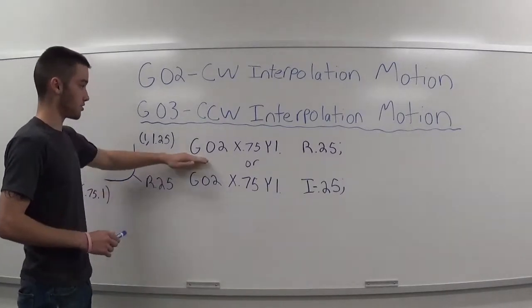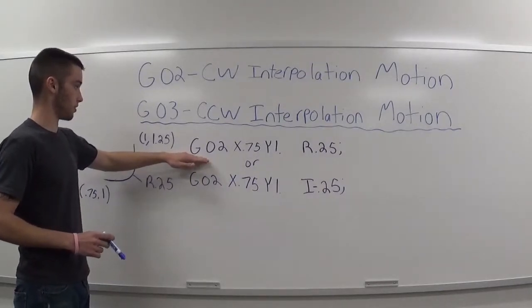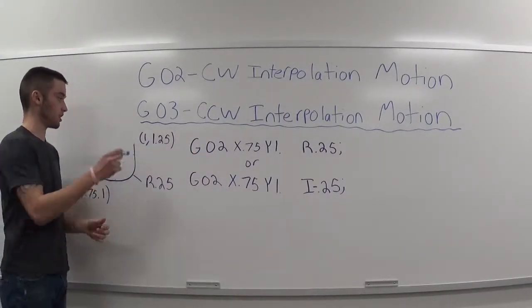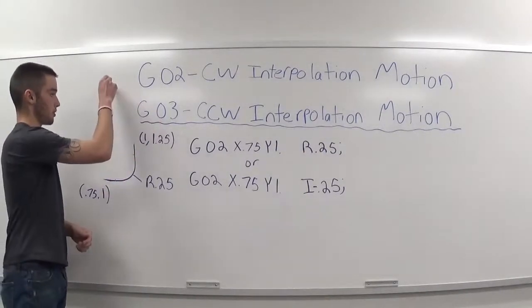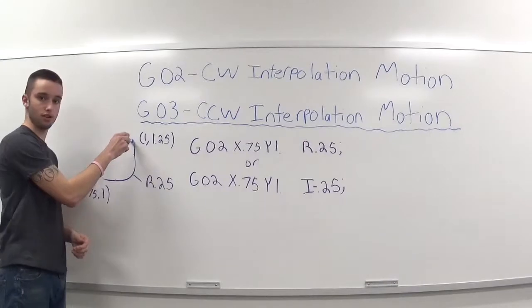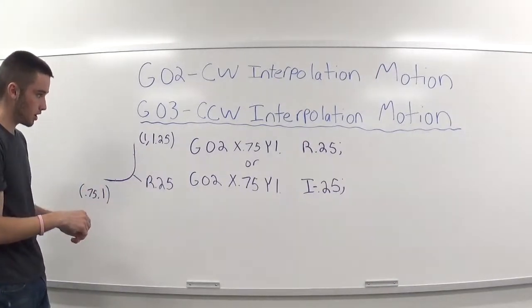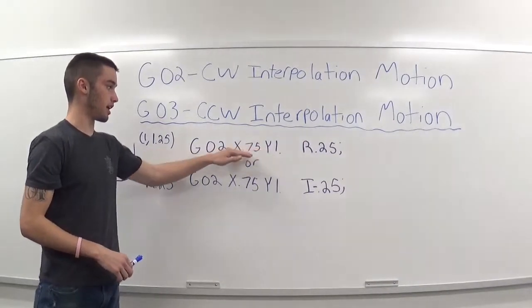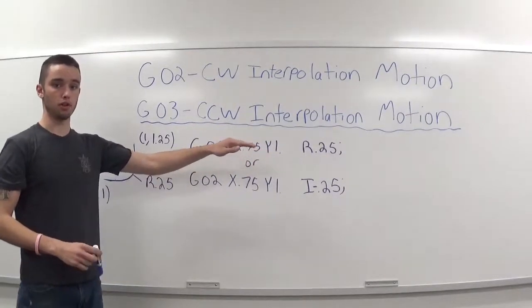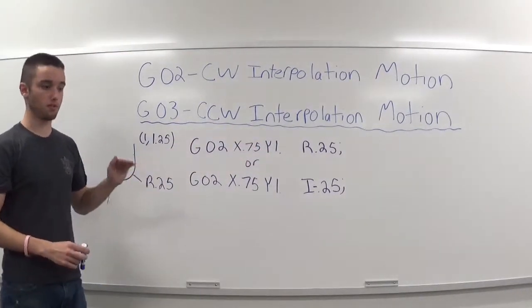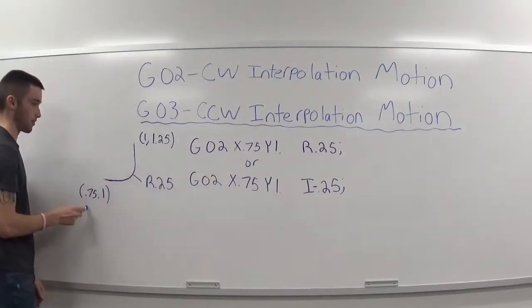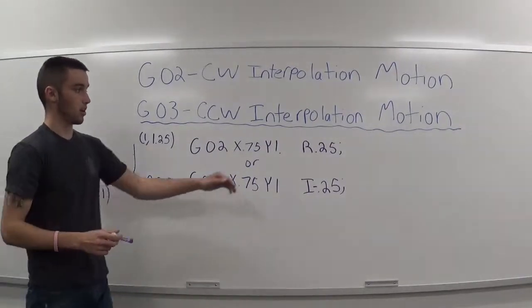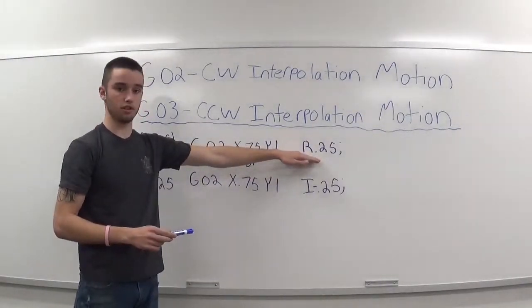So, we're going over G02. And before we start with the G02, you need to make sure that your tool is at the start location. You can't be out here, you can't be up here. You have to be at the start location of your arc. And then we have the x and the y value. The x and the y value is where the tool is going to be ending up after it does the arc. So, as you can see, we have the x of 0.75 and a y of 1. And then we have R, which is the radius.